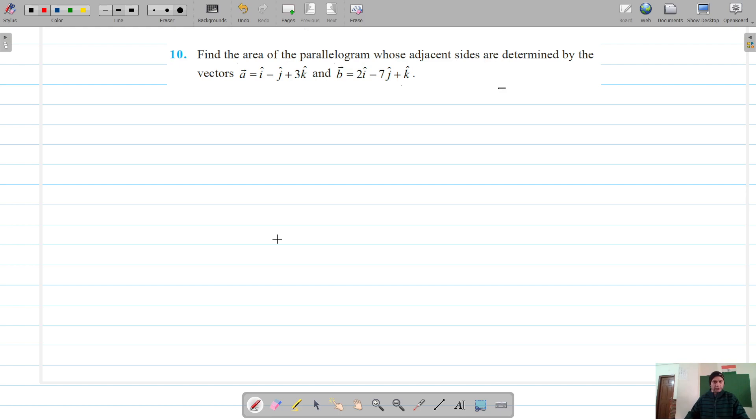The next question is question number 10. We have to find the area of the parallelogram whose adjacent sides are determined by the vectors a and b. To solve this, let's say this is our parallelogram.